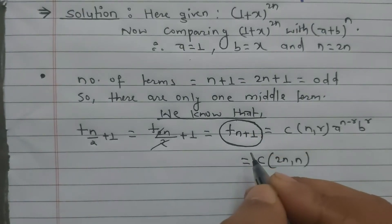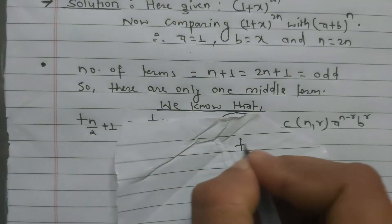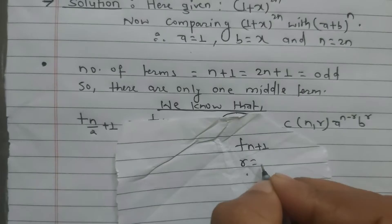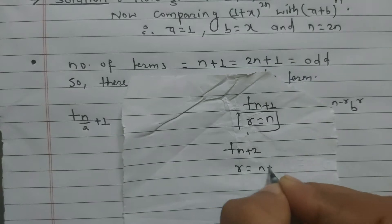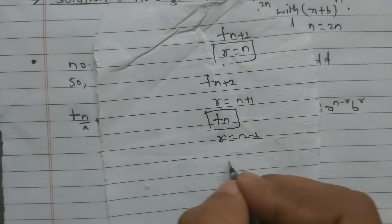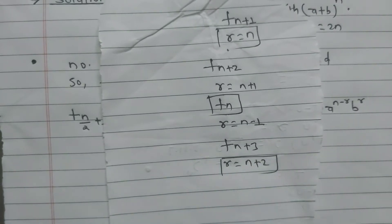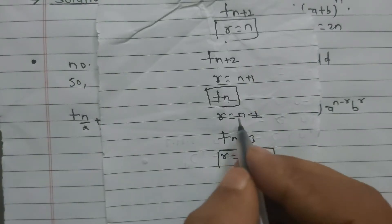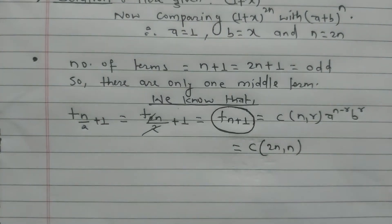For example: if T_(n+1), then r = n. If T_(n+2), then r = n+1. If T_n, then r = n−1. If T_(n+3), then r = n+2. We always subtract 1 from the term subscript to get r.